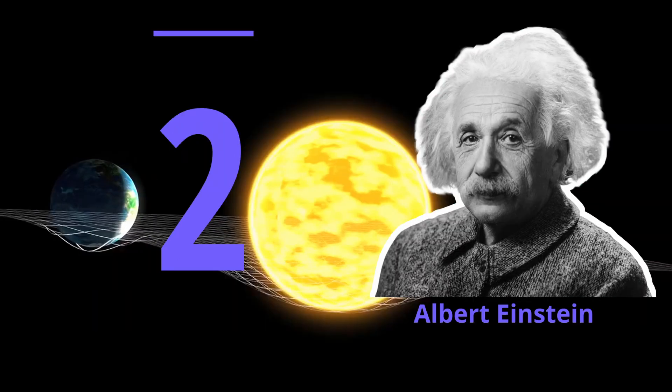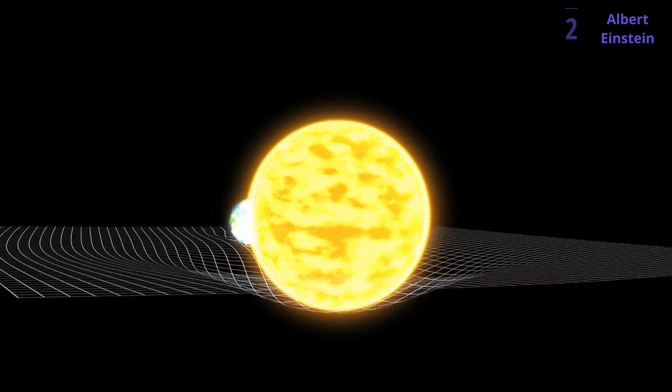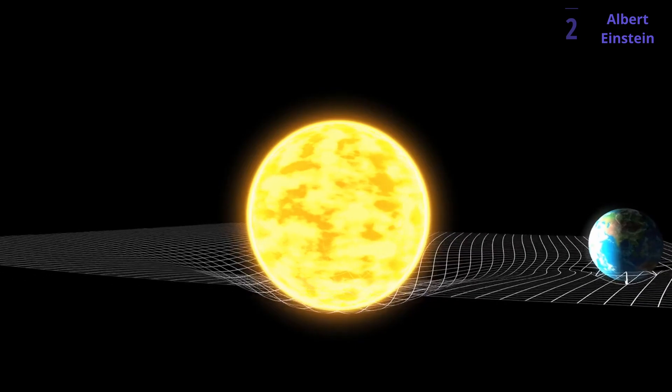Number 2. Albert Einstein. Albert Einstein secures a spot on this list of top physicists for his revolutionary theories that fundamentally changed our understanding of space, time, gravity, and light. Here's why his contributions are monumental.